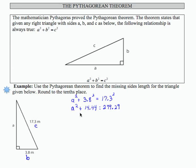I'm going to subtract 14.44 from both sides of the equation. If I do that, on the left-hand side, I get a squared plus 0, which just leaves me a squared.